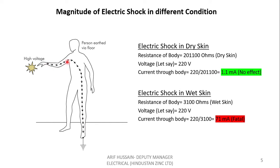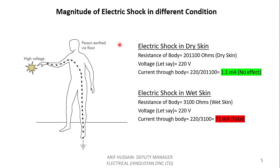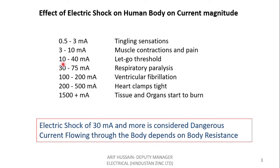Let us see the magnitude of current flowing through the body when this person gets a shock from the live wire to the foot. In dry skin condition, assuming a voltage of 220 volts, by Ohm's law, current equals voltage divided by resistance: 220 divided by 2,01,100 equals approximately 1.1 milliamperes. We've seen that 1.1 milliamperes gives just a tingling sensation and nothing else — perfectly fine. However, in wet condition, the scenario is totally different — we'll have around 70 milliamperes of current flowing through the body, which falls in the range where respiratory paralysis can occur and could be fatal.